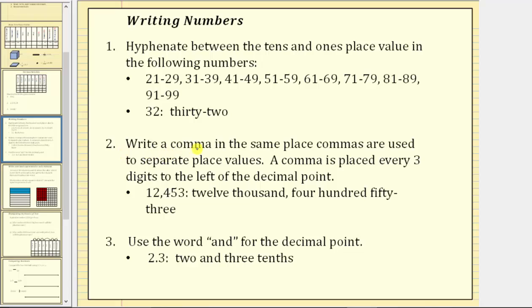Number two, we write a comma in the same place commas are used to separate place values when writing numbers using digits. A comma is placed every three digits to the left of the decimal point. So for example, we know we write 12,453 with a comma between the thousands and hundreds place value. We write this as twelve thousand, four hundred fifty-three.